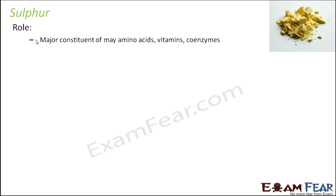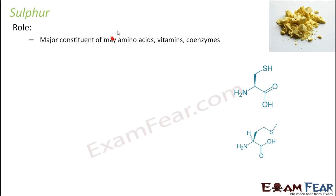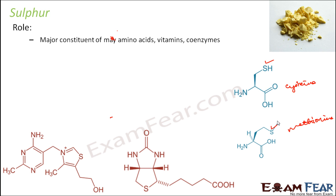Next is sulphur, which appears yellow in color. It is a major constituent of many amino acids, vitamins, and coenzymes. Examples of sulphur-containing amino acids include cysteine and methionine — both contain sulphur. Vitamins such as thiamine also contain sulphur. So sulphur helps in forming many useful compounds like amino acids, vitamins, and coenzymes.